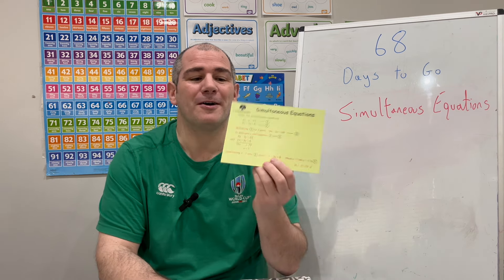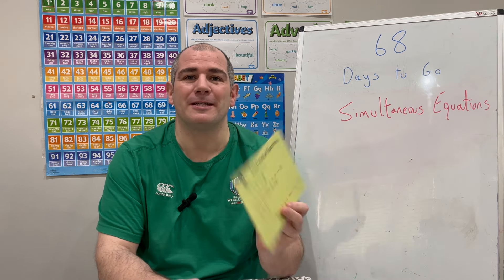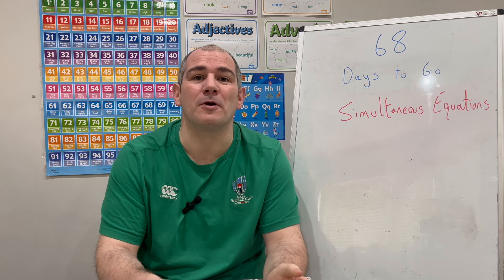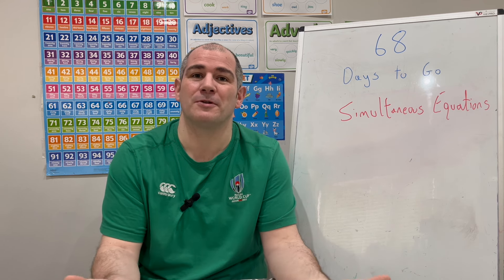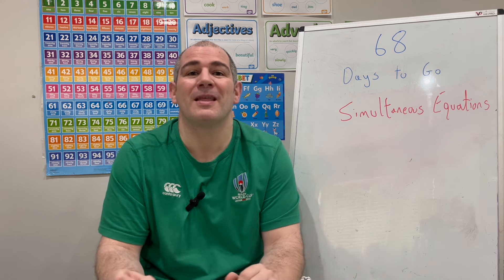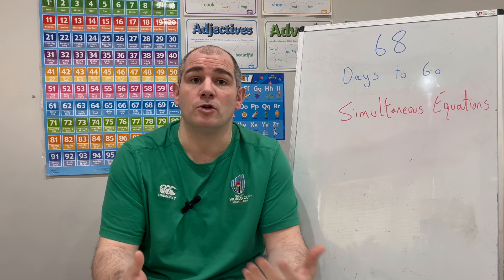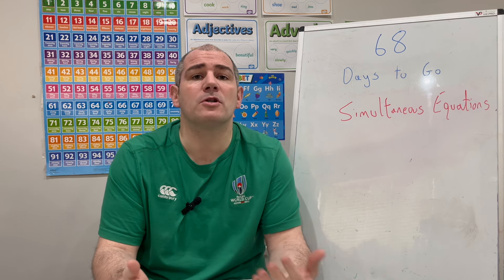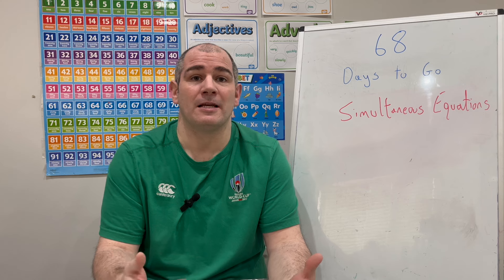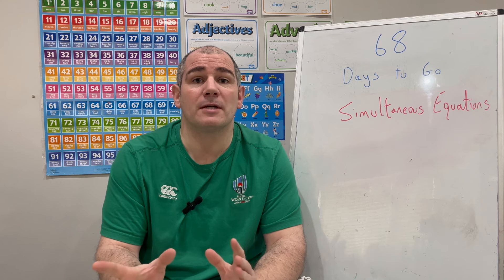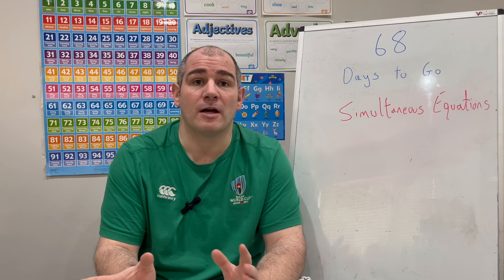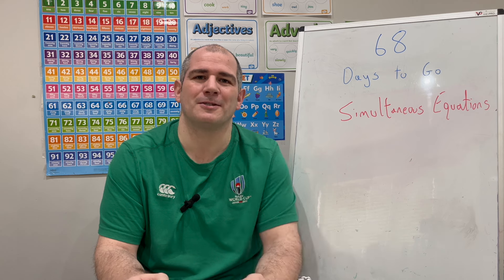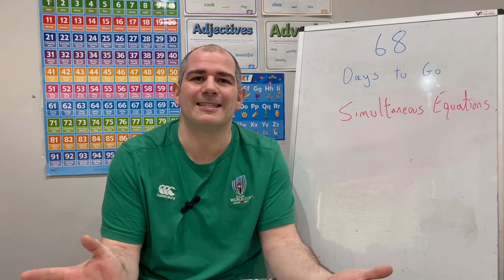If you've got the Code Mount revision card, card number 73 is the revision card for simultaneous equations and it'll be really useful for you. In this video I'm going to go through how to do some simultaneous equation questions and also a wordy question at the end. At times I'll give you a chance to try the questions yourself, so feel free to press pause. Let's get started.